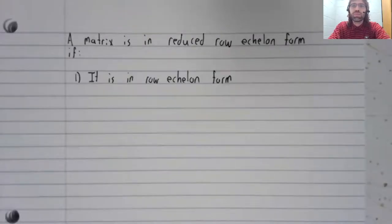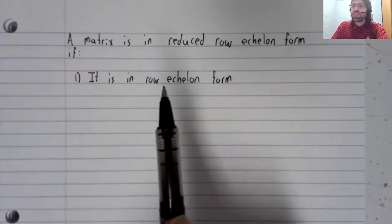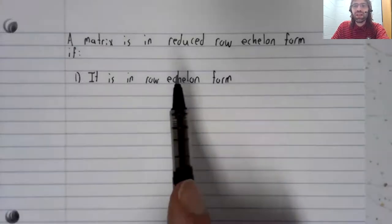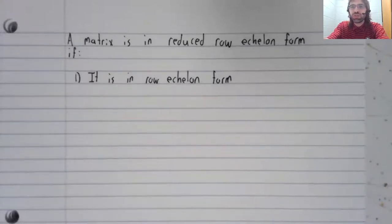First, it must be in row echelon form. So that's what I meant when I said that it's a souped up version of row echelon form, because it has to be in row echelon form. But also,